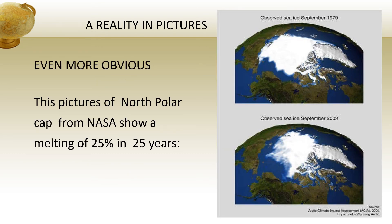Now another reality in pictures is even more obvious. These pictures of the North Polar Cap from NASA show a melting of 25% in 25 years. The upper one shows observed sea ice in September 1979, and the second shows observed sea ice in September 2003 — you can see the clear difference in the pictures.